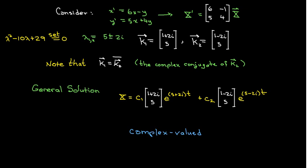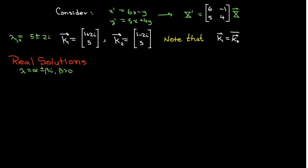So what will we do? We'll do the same thing that we have done in the past. We'll write e to the 5 plus 2i t using Euler's formula, and then use some identities. From there, we can get some solutions in real forms in terms of sine and cosines.